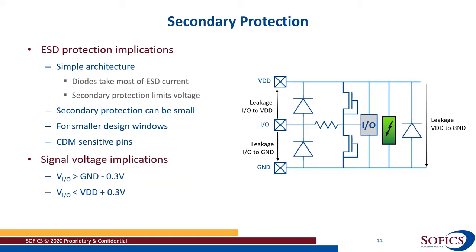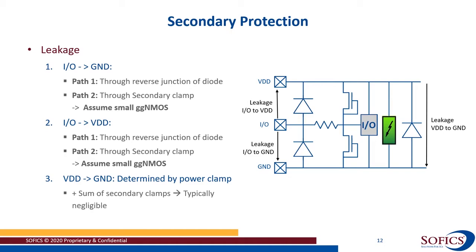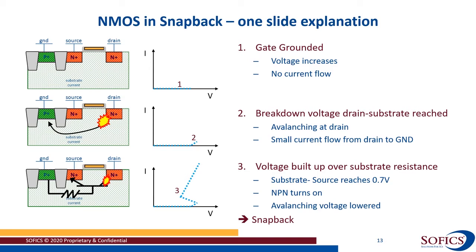The signal voltage implications are exactly the same as for dual diode protection — the signal must remain between ground minus 0.3V and VDD plus about 0.3V. For leakage, the first path is the same reverse diode, but there is now a secondary path through the resistance and the secondary clamp. In the following slides, the clamp is assumed to be a small NMOS device with its gate coupled to ground, i.e., to the source of that NMOS.